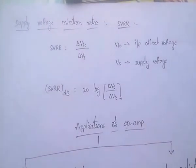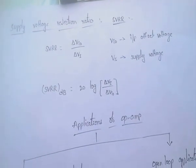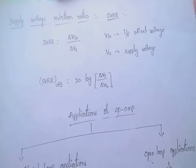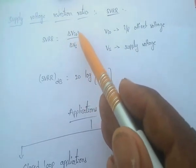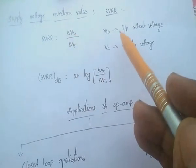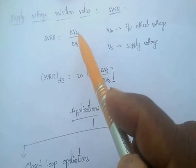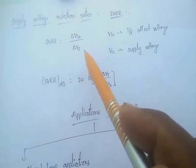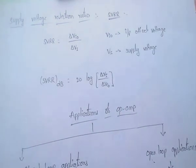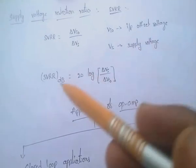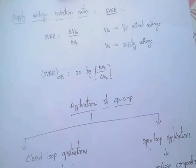Here, supply voltage rejection ratio — SVRR. SVRR is the ratio of input offset voltage to the supply voltage. It is the change in the input offset voltage to the change in the supply voltage. SVRR in case of dB equals 20 log of delta VS by delta Vi0.